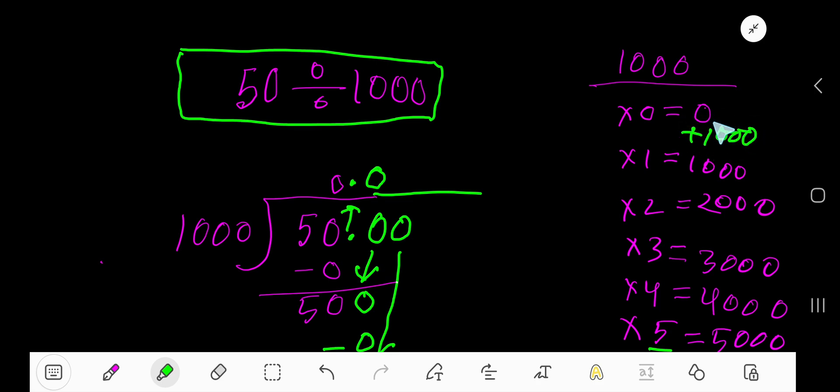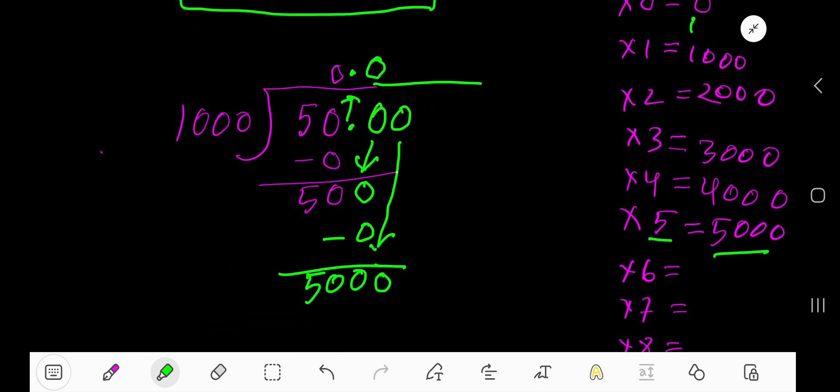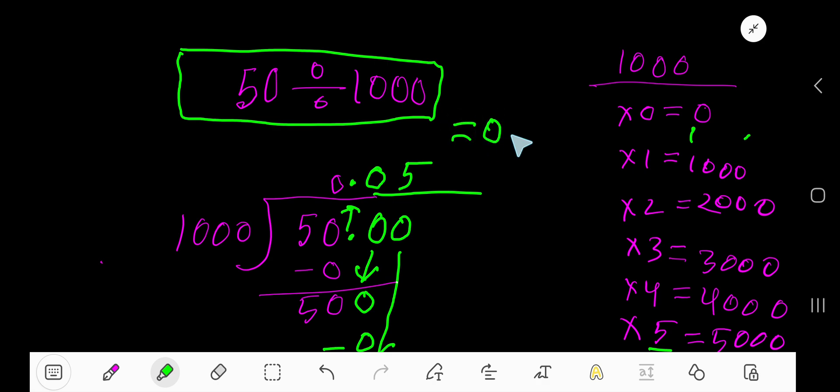the previous step, you will get 1,000. Then 1,000 times 2, just add 1,000 with the previous step - 1,000 plus 1,000 is 2,000. This pattern will work for all. 1,000 goes into 5,000 how many times? Five times. So write five. Five times 1,000 is 5,000. If you subtract, you will get zero. That is 0